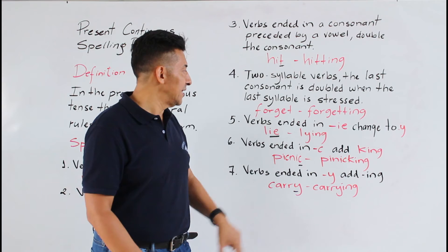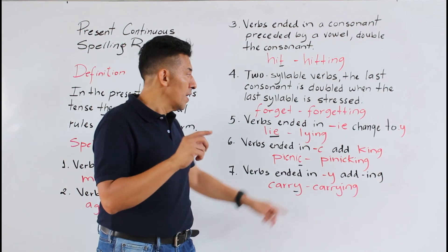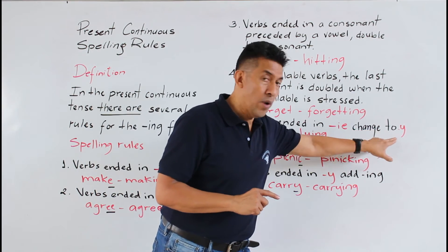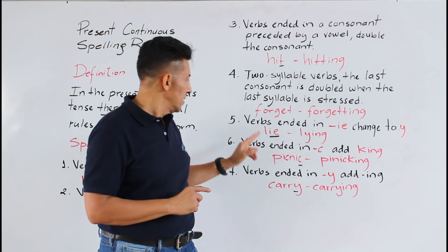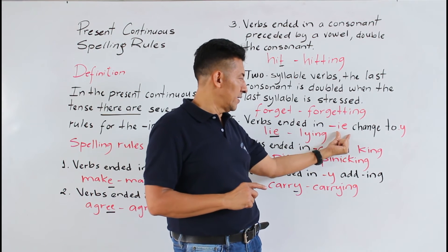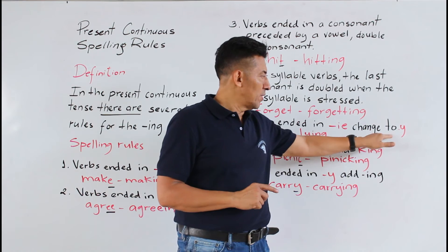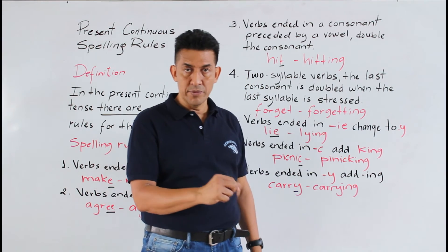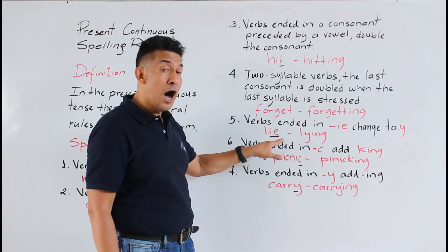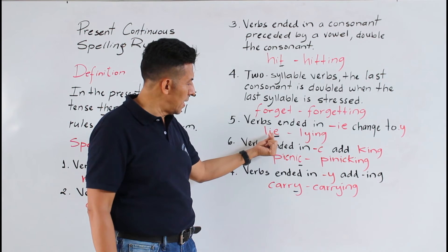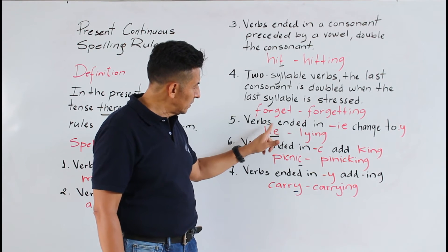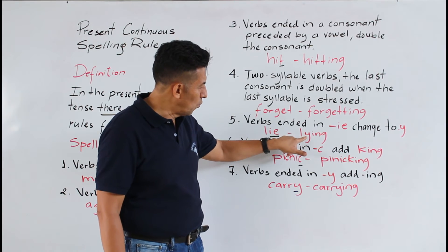Verbs ending in IE — IE is changed to Y. ¿Qué dice? Que los verbos que terminan en IE, así como esta terminación, se cambia por la letra Y. Es otra regla que hay que recordar: la IE se cambia por Y y le agrego ING.